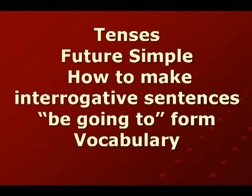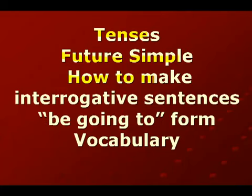أخواني الكرام، معكم أخوكم عنات الأخان. ما زلنا مستمرين في الدروس عن التنسز أو الأزمنة. واليوم نتكلم مزيد عن future simple أو المستقبل البسيط، وبالتحديد عن how to make interrogative sentences في be going to form - يعني كيف ننشئ ونكتب الجملة السوالية والاستفهامية في النوع الثاني. في درس سابق تكلمنا عن will form.